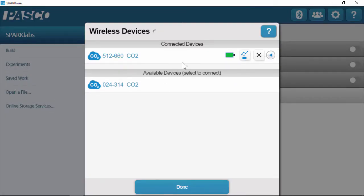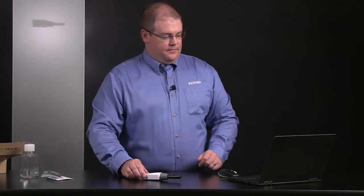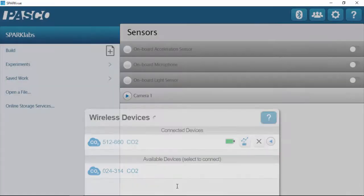Once it's connected, you'll see it move into connected devices within the software, and the Bluetooth LED is now blinking green, indicating that it's paired. I'll click done to close the menu.